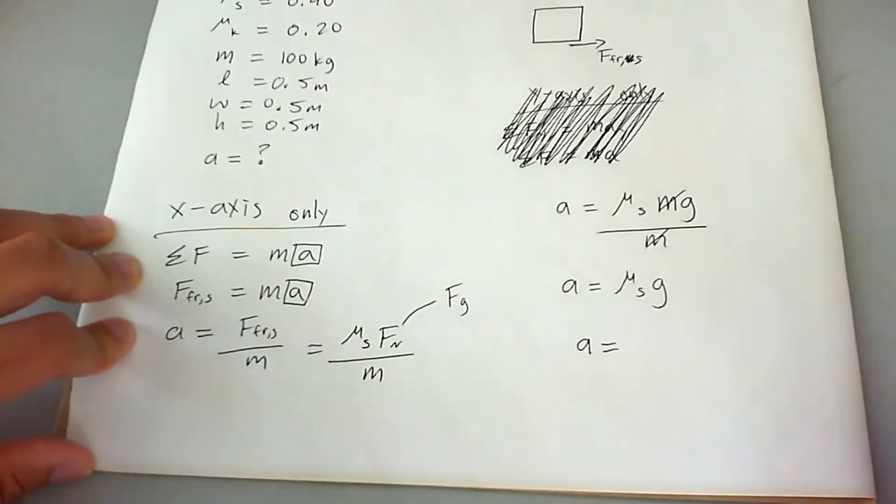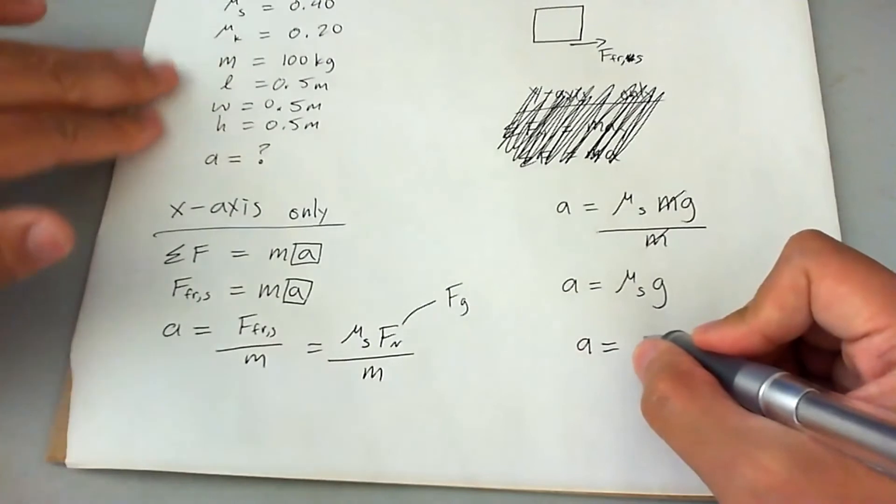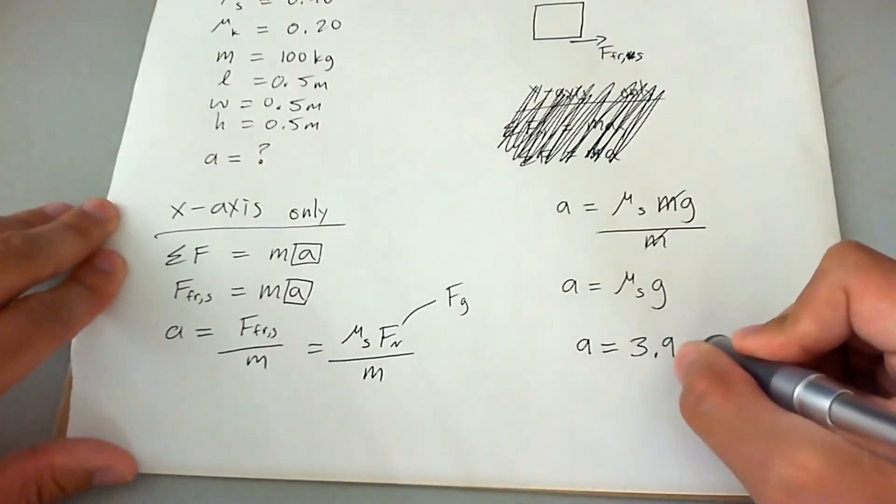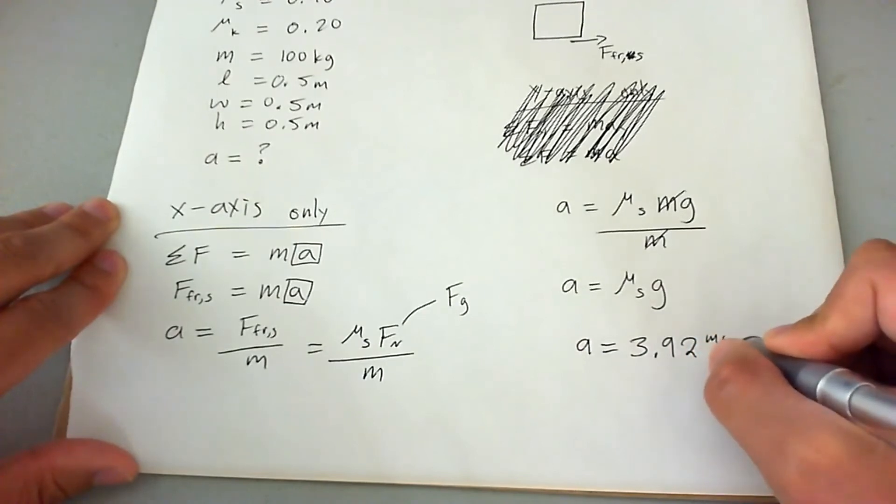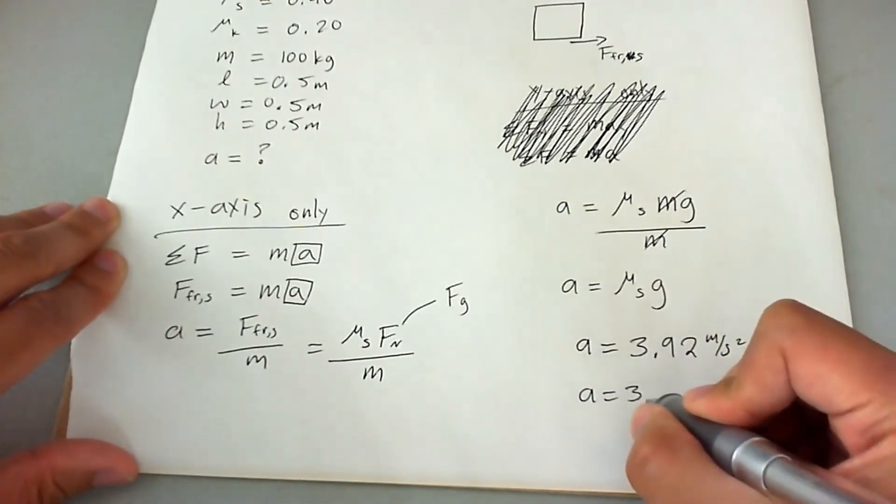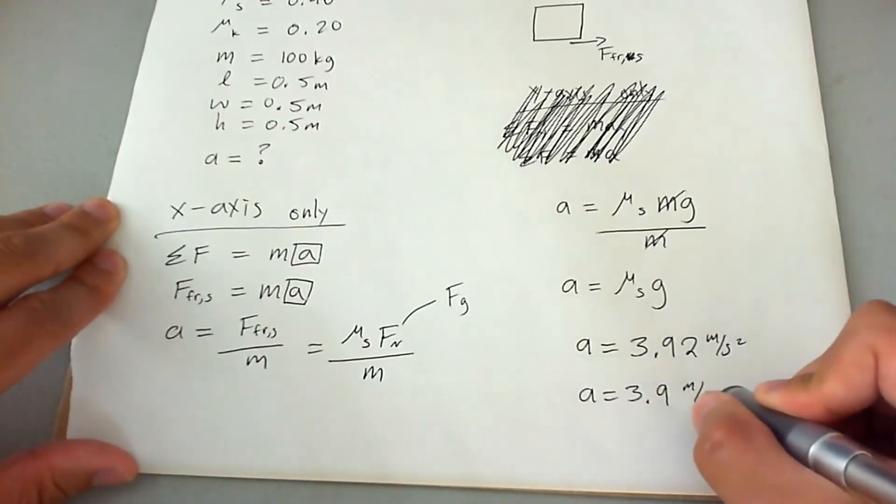If you calculate that with the given knowns, it becomes 3.92 meters per second squared, which you could then say is 3.9 if you follow the rules of sig figs.